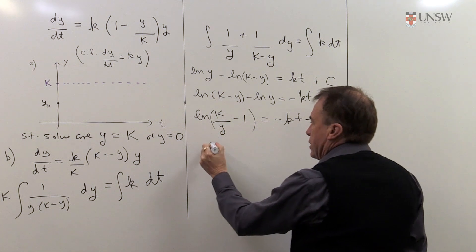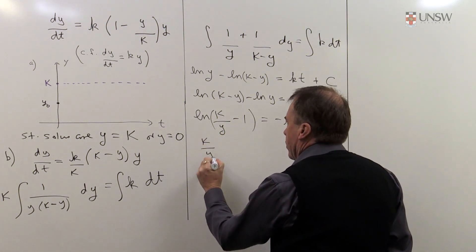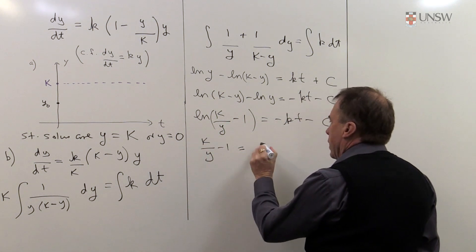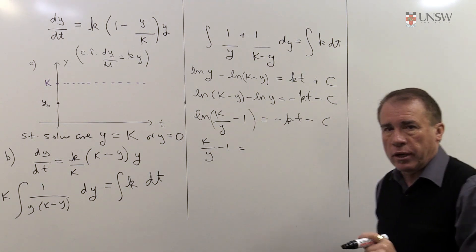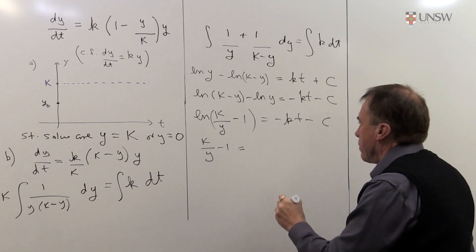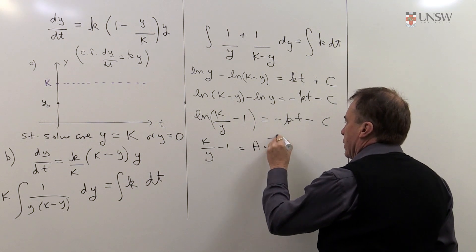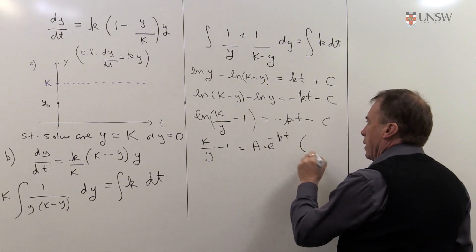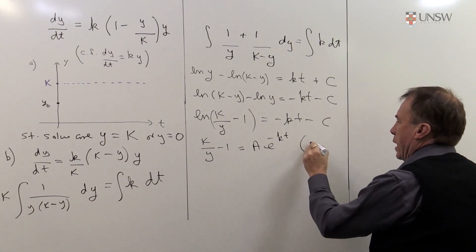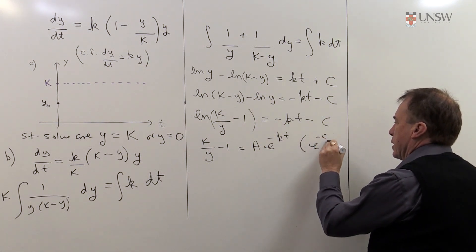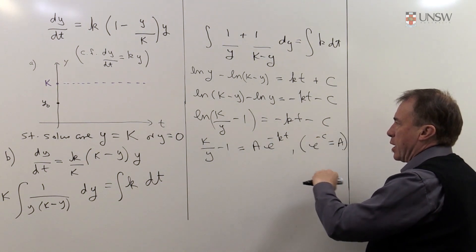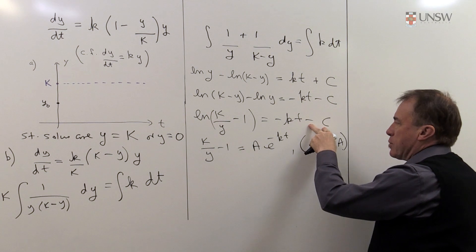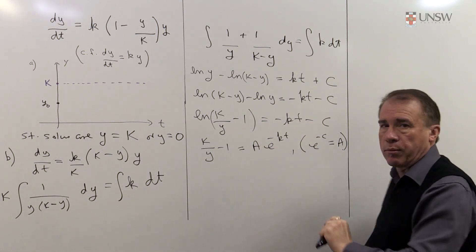OK, well now I'm going to exponentiate both sides, so I get k over y minus 1. Now I'm going to get, this is a step you would have seen earlier when you were solving these DEs. So I'm going to write this as a e to the minus kt, where, who is this a? Well, this a is just e to the minus c. So when you exponentiate both sides, you'll get to that, times e to the minus c, and we just relabeled that as a.